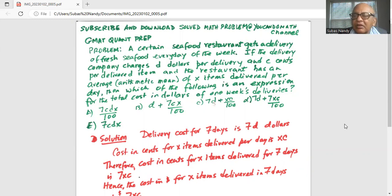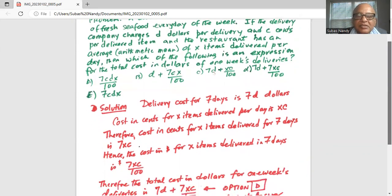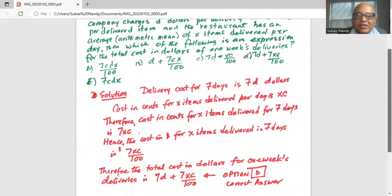Hence the cost in dollars for X items delivered in seven days is 7XC in cents, so you divide it by 100 to get it in dollars. Therefore, the total cost in dollars for one week's deliveries is 7D, the fixed charge, plus 7XC divided by 100. The correct answer is option D.